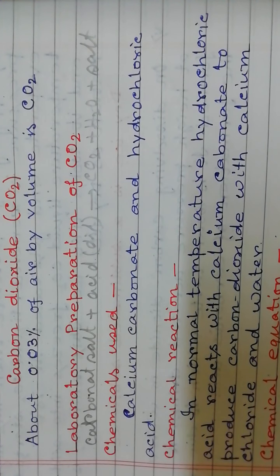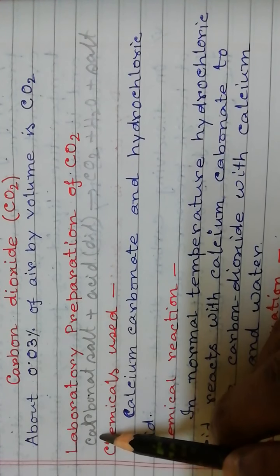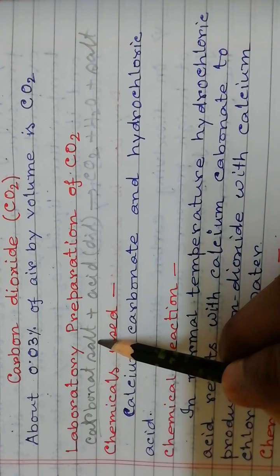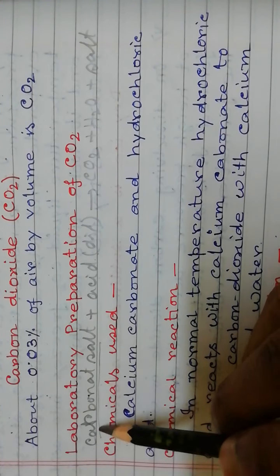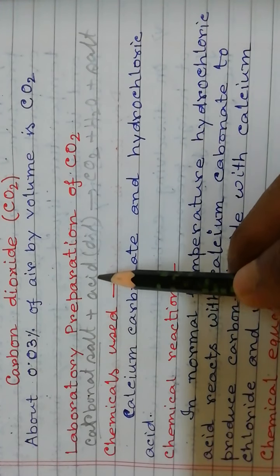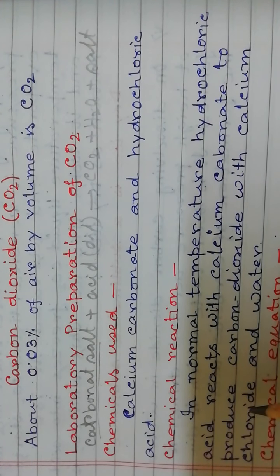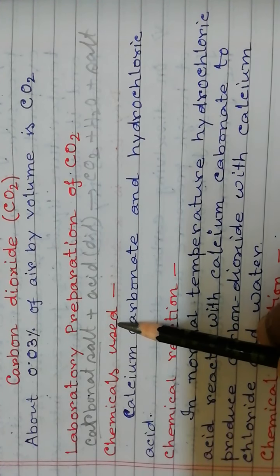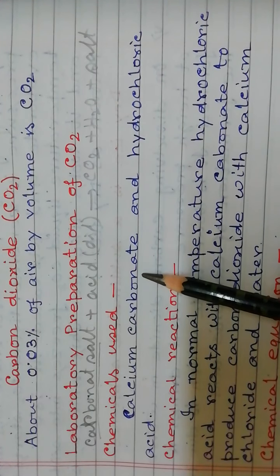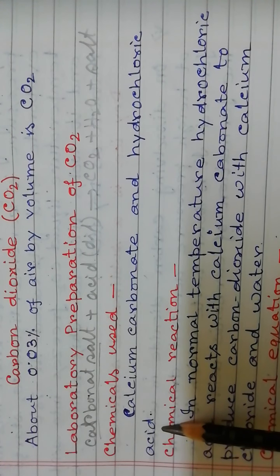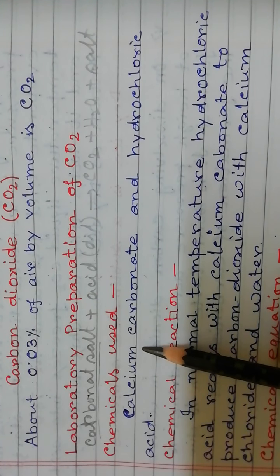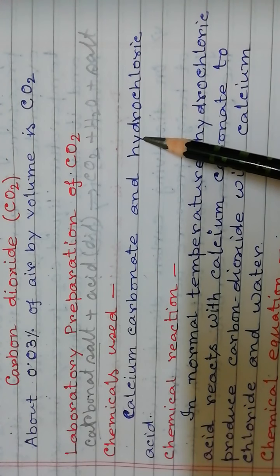But in the laboratory, how do we prepare carbon dioxide? Here we use calcium carbonate as the carbonate salt, and dilute hydrochloric acid as the acid. The chemicals used for the laboratory process are calcium carbonate (CaCO3) and hydrochloric acid (HCl).